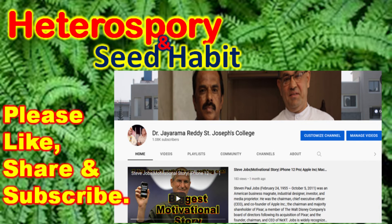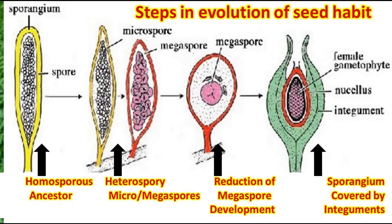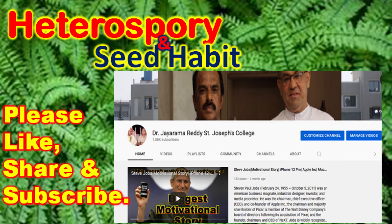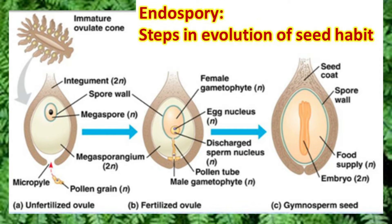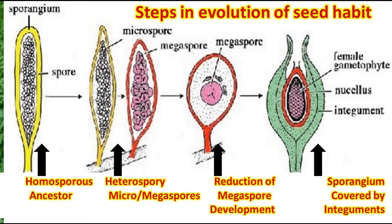The steps involved in the evolution of seed habit begin with ancestral pteridophytes like Psilotum producing one type of spore — homospores — and even the fossil pteridophyte Rhynia produced only one type of spore. In the course of evolution, pteridophytes started producing two different types of spores, called heterospory — microspores and megaspores. Reduction of megaspore development occurred in the next stage, and finally led to the formation of seed habit, where gymnosperms produce the female gametophyte enclosed by nucellus and integuments. Thus heterospory led to the formation of seed habit.